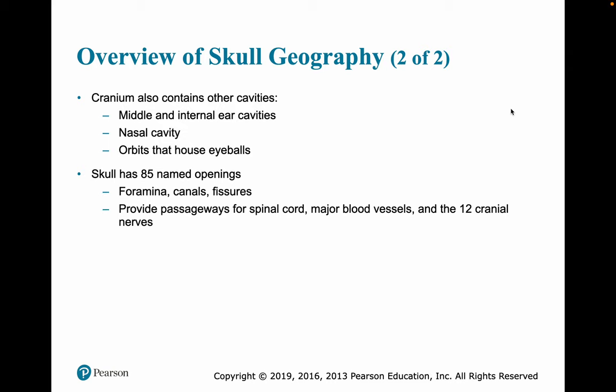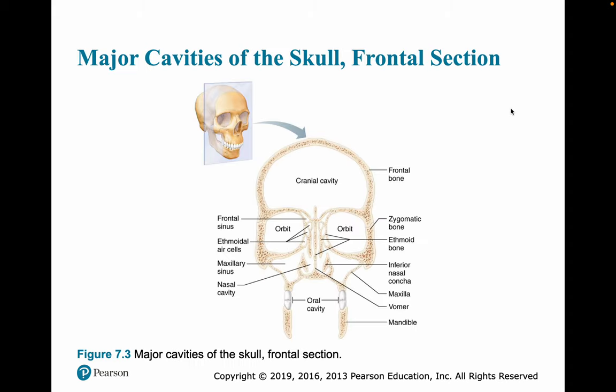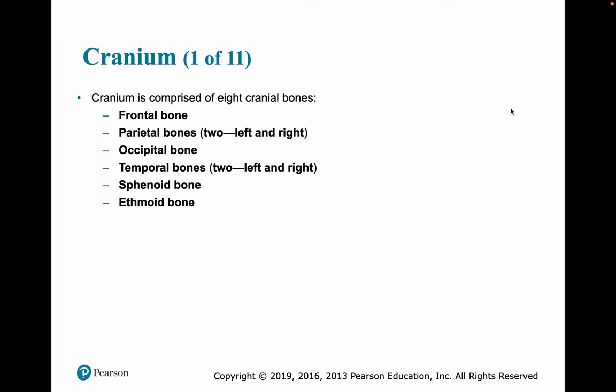These openings are called foramina, canals, and fissures. They provide passageways for the spinal cord, major blood vessels, and the 12 cranial nerves. The cranium is made up of eight bones, two of which are paired: the frontal bone, the paired parietal bones, the occipital bone, the paired temporal bones, the sphenoid, and the ethmoid bone.